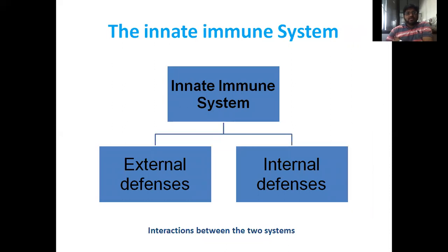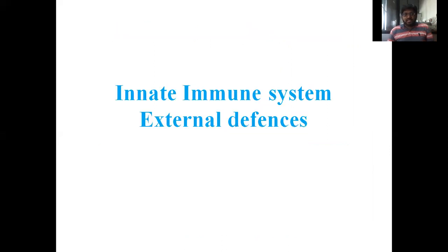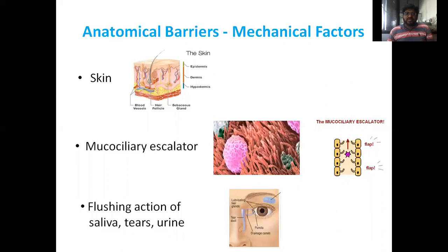The innate immunity system is divided into two parts: external defenses and internal defenses. For external defenses, the first category is anatomical barriers, also known as mechanical factors. The first is skin, which is an anatomical and physiological barrier. The second is the mucociliary escalator present in the mucous membrane. The third is flushing actions of saliva, tears, and urine — produced in salivary glands, eyes, and the urogenital pathway — which act as anatomical barriers.